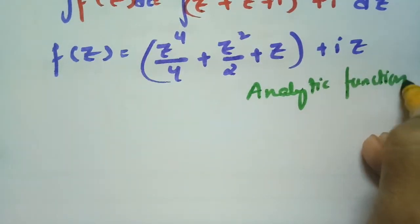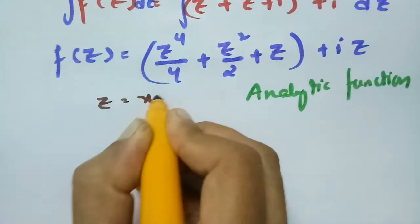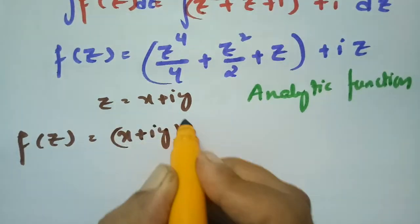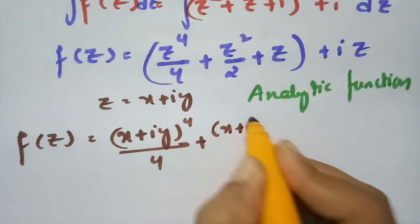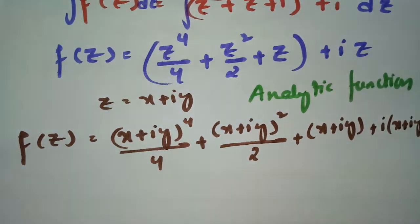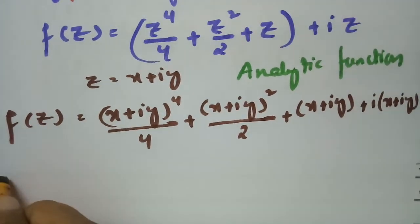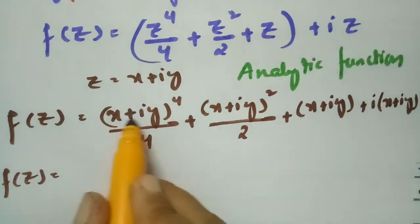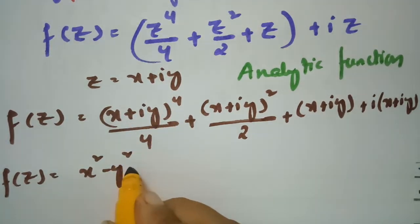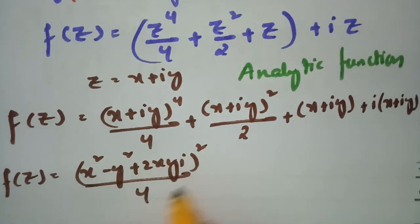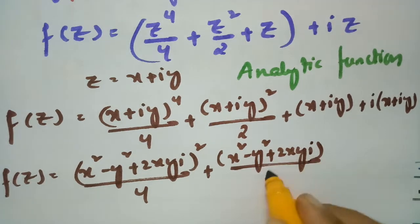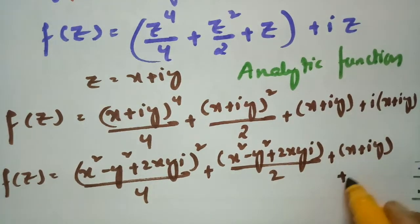Now we have to find the real part. We know z equals x + iy. Substituting, f(z) equals (x + iy)⁴/4 plus (x + iy)²/2 plus (x + iy) plus i times (x + iy). Expanding (x + iy)² gives x² − y² + 2xyi, and (x + iy)² whole squared gives x⁴ − y⁴ − 4x²y² plus imaginary terms.